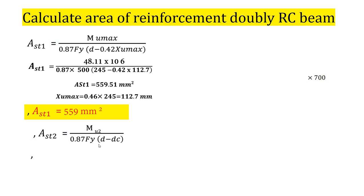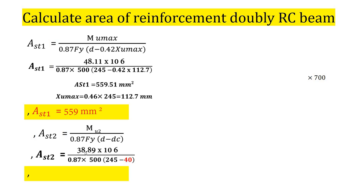Now let us calculate Ast2, which equals the additional moment divided by (stress × (d − dc)), where dc is the cover to the compression reinforcement. The additional moment is 38.89 kNm, fy is the yield stress, and dc is the cover to compression reinforcement. Ast2 comes out to 437 mm².